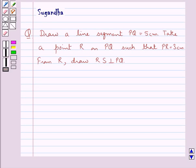Hello and welcome to the session. In this session we discuss the following question: draw a line segment PQ equal to 5 cm, take a point R on PQ such that PR is equal to 3 cm, and from R draw RS perpendicular to PQ.